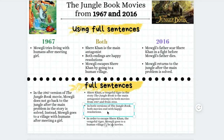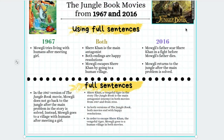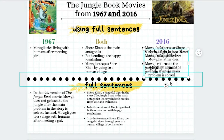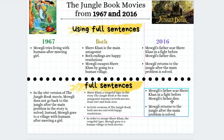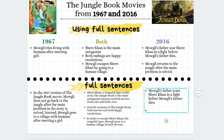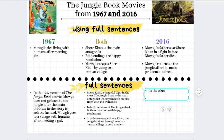After this, the last ones we want to write as full sentences are the points that happened in the 2016 movie only. The first one we have is 'Mowgli's father scars Shere Khan in a fight before Mowgli's father dies.' So we're going to say: In the 2016 version of the Jungle Book, the movie shows a scene where Mowgli's father scars Shere Khan.